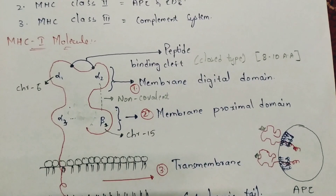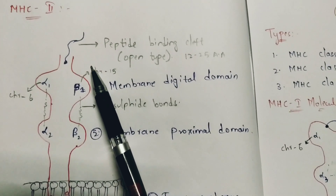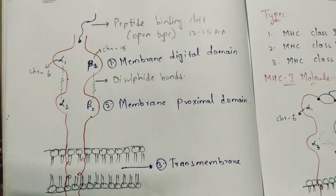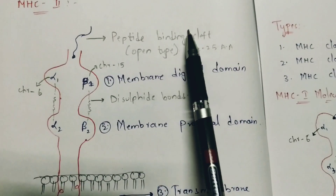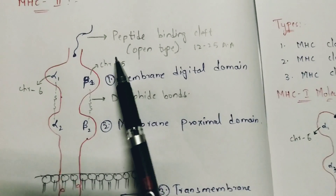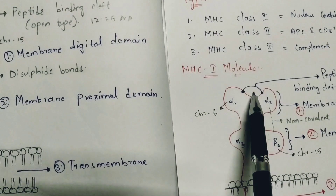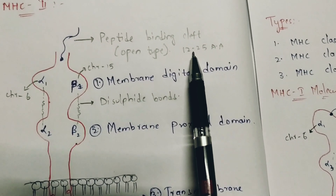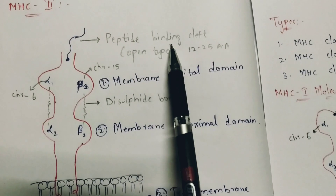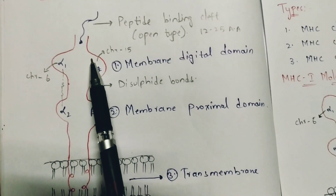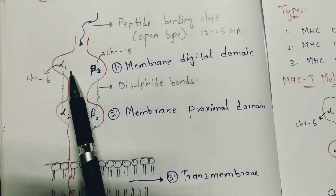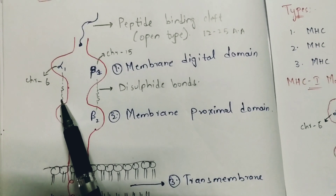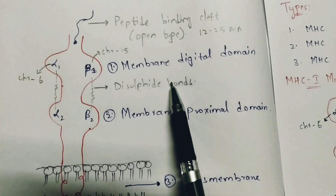Now let us discuss MHC class 2 molecules. The MHC class 2 molecule also consists of a peptide binding cleft, but here it is open type, unlike the closed type in class 1. The size of this peptide binding cleft is formed by a combination of 12 to 25 amino acids. It consists of alpha and beta chains linked with disulfide bonds.